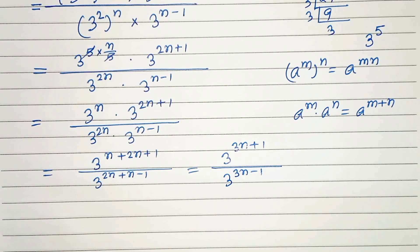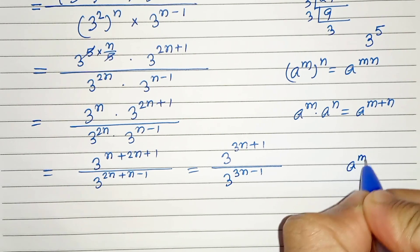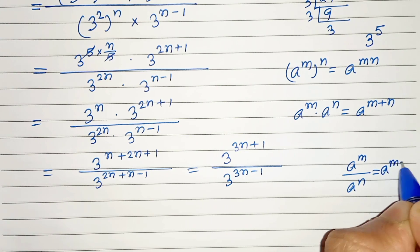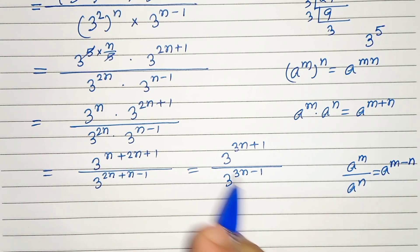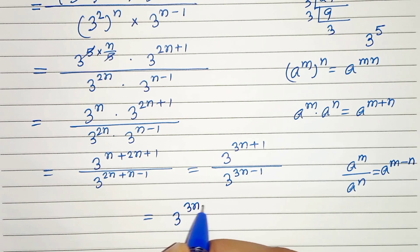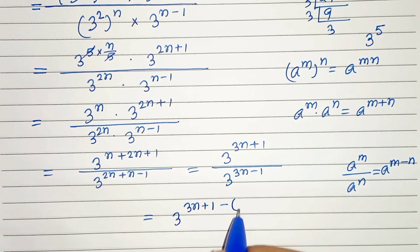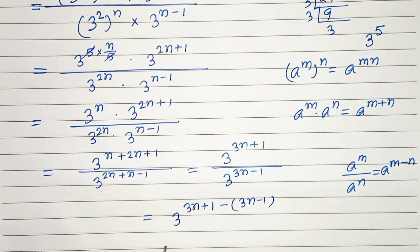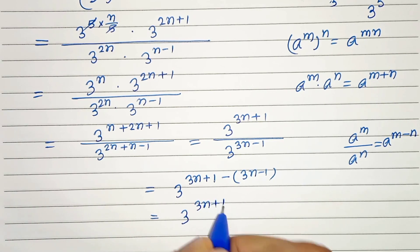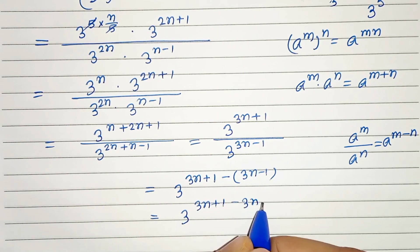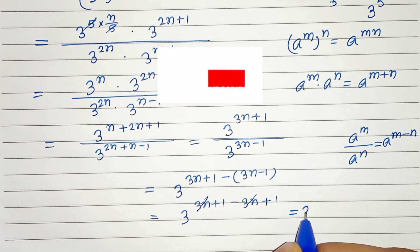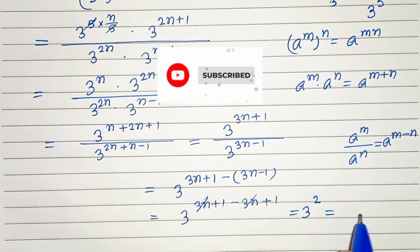Another exponential property we will use is: a raised to the power m divided by a raised to the power n can be written as a raised to the power m minus n. Applying this, we get 3 raised to the power 3n plus 1 minus of 3n minus 1. That gives us 3 to the power 3n plus 1 minus 3n plus 1. So, 3n and 3n get cancelled, and we are left with 1 plus 1 equals 2 — that is 3 squared.